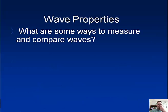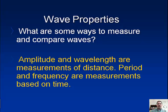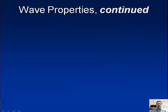Alright, let's start looking at this first question. We're looking at wave properties. So amplitude and wavelength are measurements of distance. Period and frequency are measurements based on time. So period and frequency are more of a speed type of measurement whereas amplitude and wavelength are going to be distances.